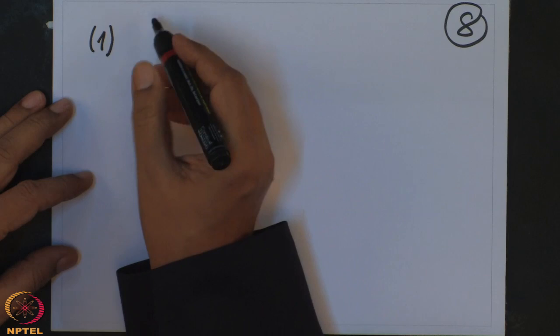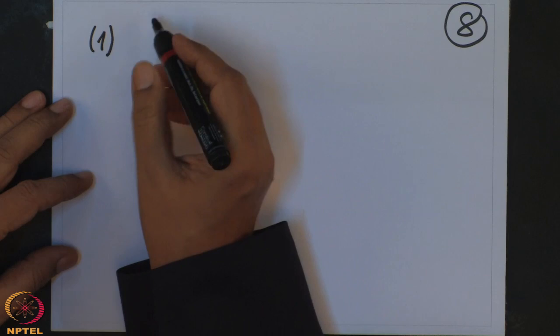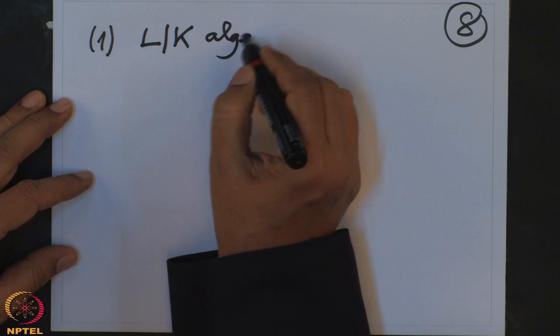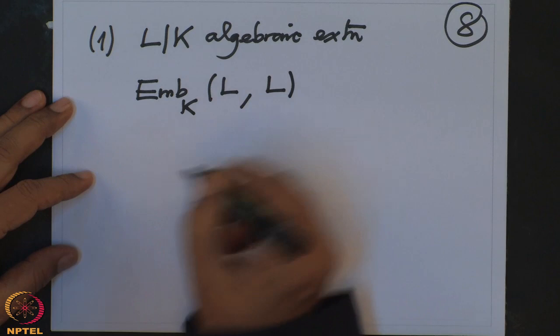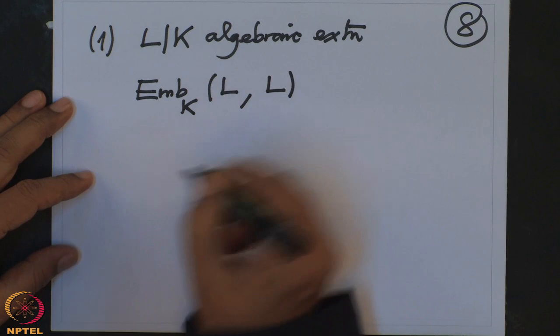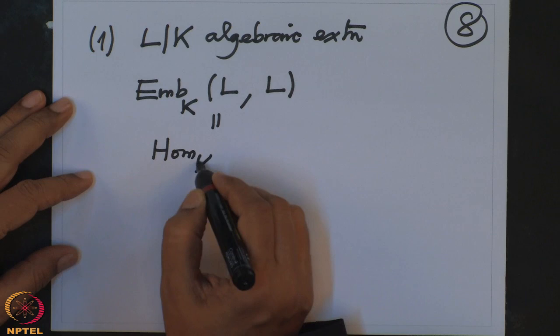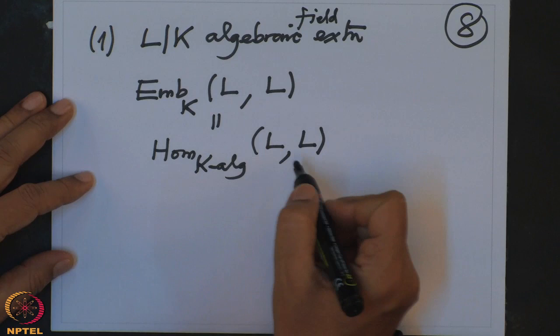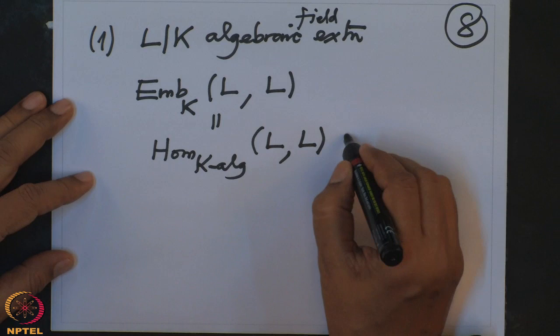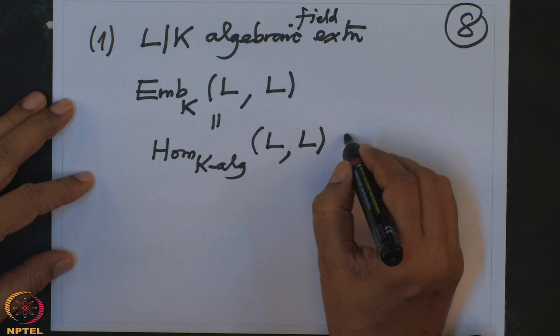The remark I want to make is the following. If L over K is an algebraic extension (not only finite but any algebraic), and if σ is a K-embedding of L into L, then a priori it is only injective — but in fact it is also surjective. So these embeddings are automorphisms of L as a K-algebra, which is what we call the Galois group of L over K.